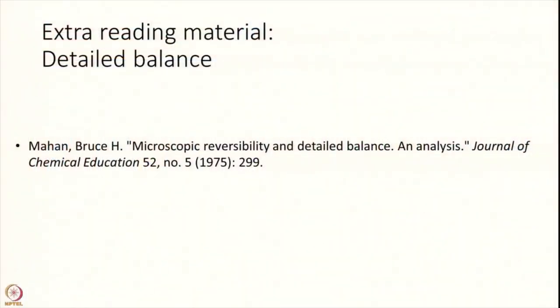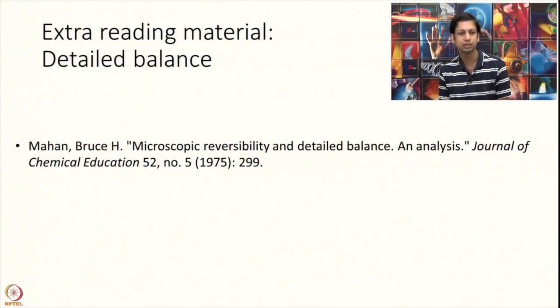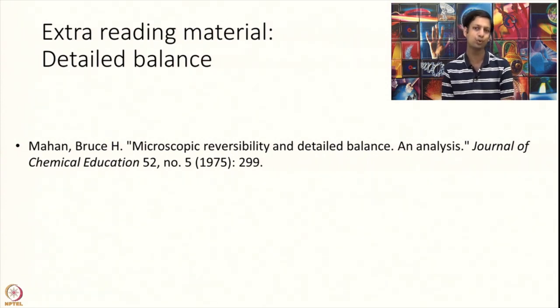You can find a very beautiful paper written by Bruce Mahan in 1975 titled Microscopic Reversibility and Detailed Balance. What I am covering today in the next maybe 15-20 minutes is a much simpler proof than is provided in this paper as applicable to collision theory. But for those who are interested can go to this paper and read the full proof. It is very readable and you have enough information to be able to go through this actually.